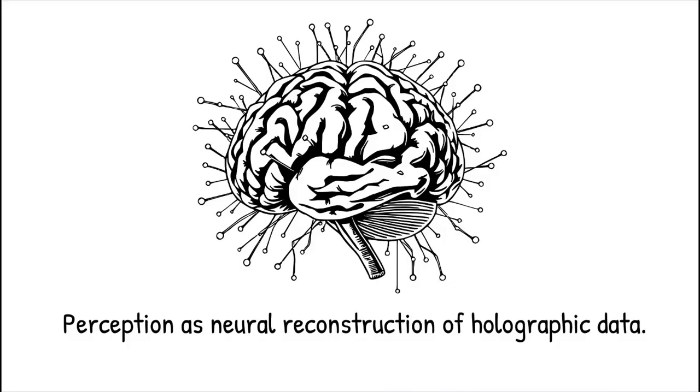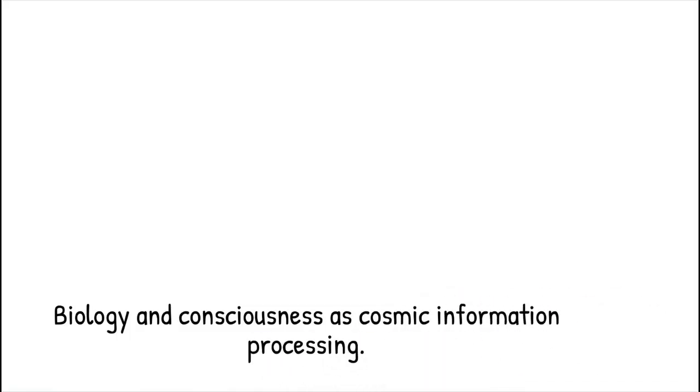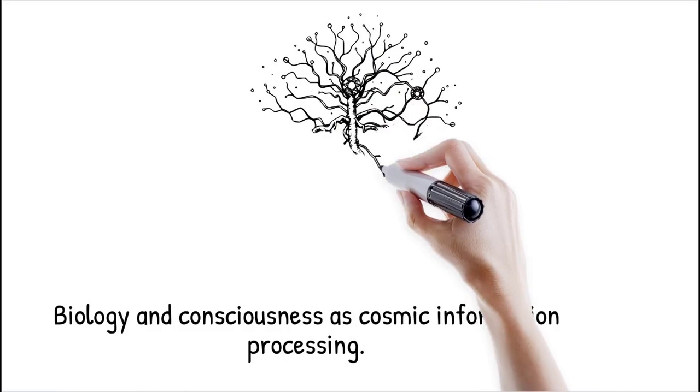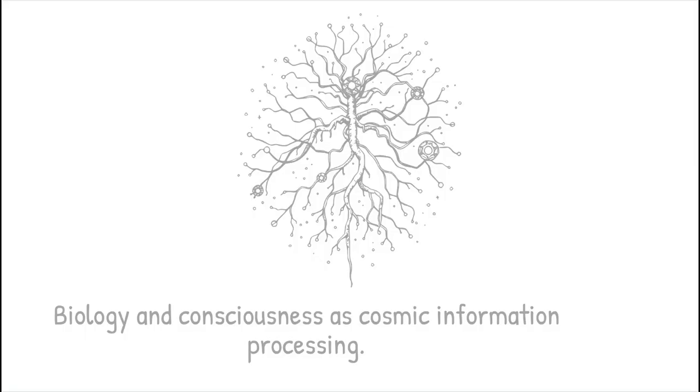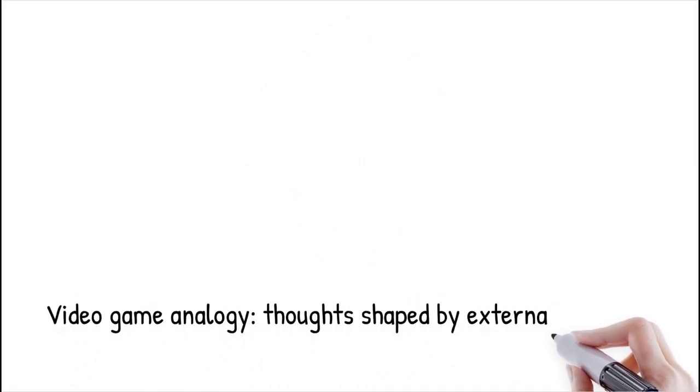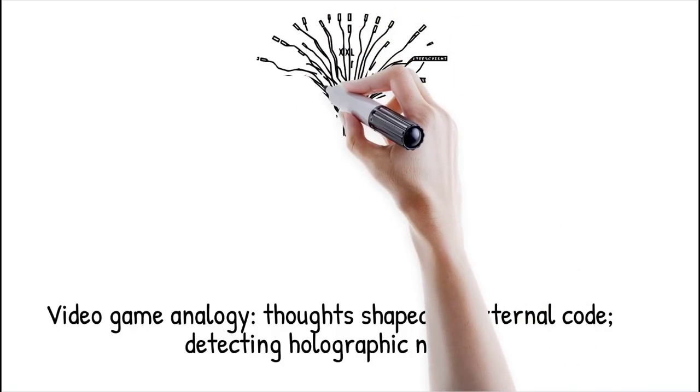If our bodies and minds are emergent shadows of boundary information, then perception itself is a reconstruction of holographic data by neural processes. Conscious experience, memory, and self-awareness would be higher-order manifestations of patterns encoded in a distant two-dimensional layer. This raises profound questions about free will, identity, and the nature of life. It suggests that biology and consciousness are as much about information processing on the cosmic screen as they are about biochemistry. Some theorists speculate that neuronal information patterns correlate with holographic data streams in a yet-unknown mapping - like believing that a video game character's thoughts and actions are entirely determined by code running on an external server.